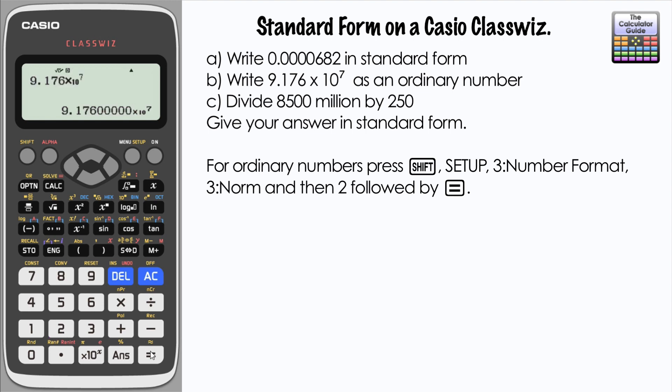And here we have our answer as an ordinary number. So how would we say that? 91 million, 760 thousand as an ordinary number. Let's take a look at part C: divide 8500 million by 250.